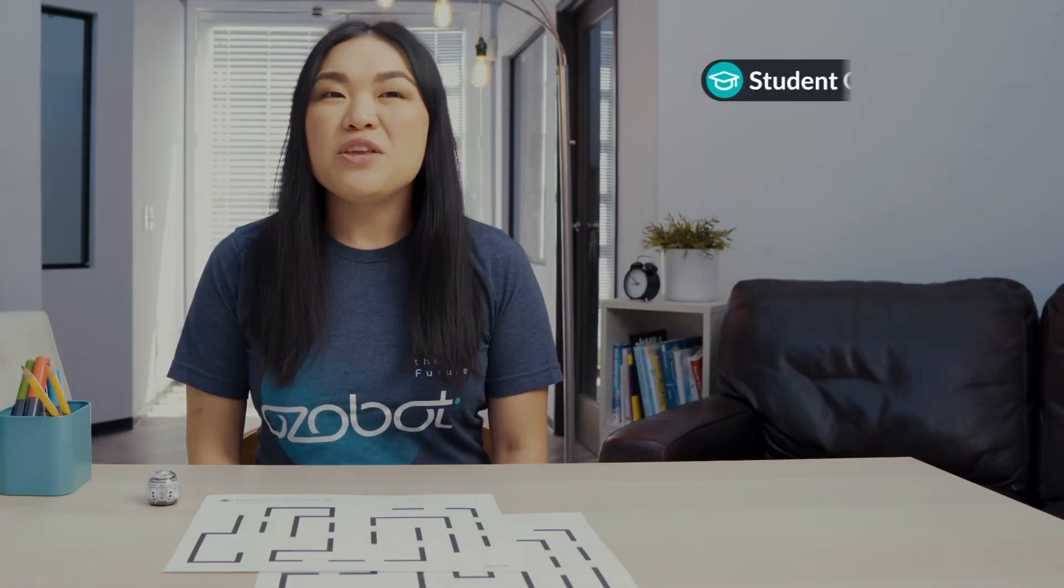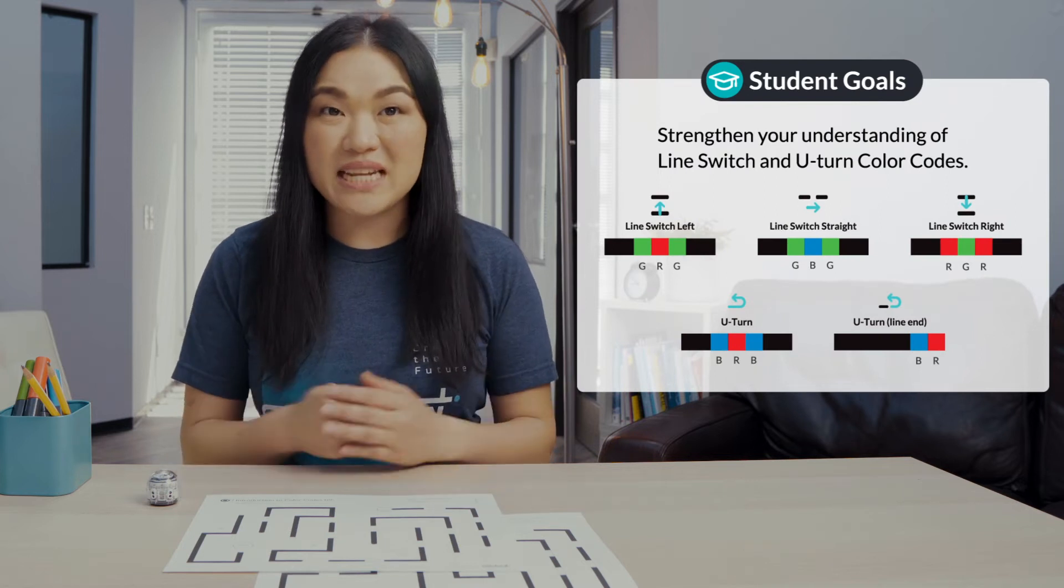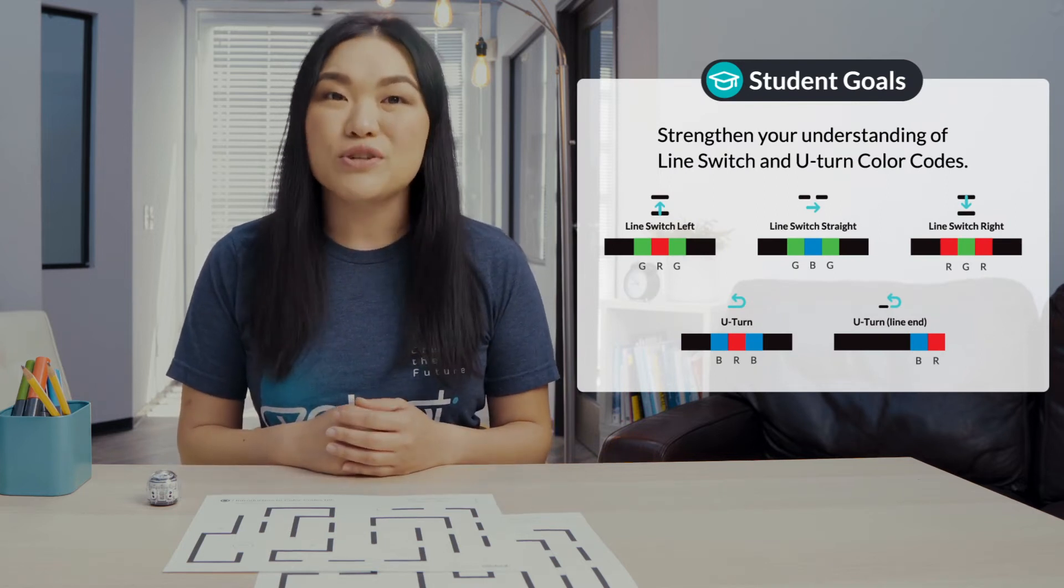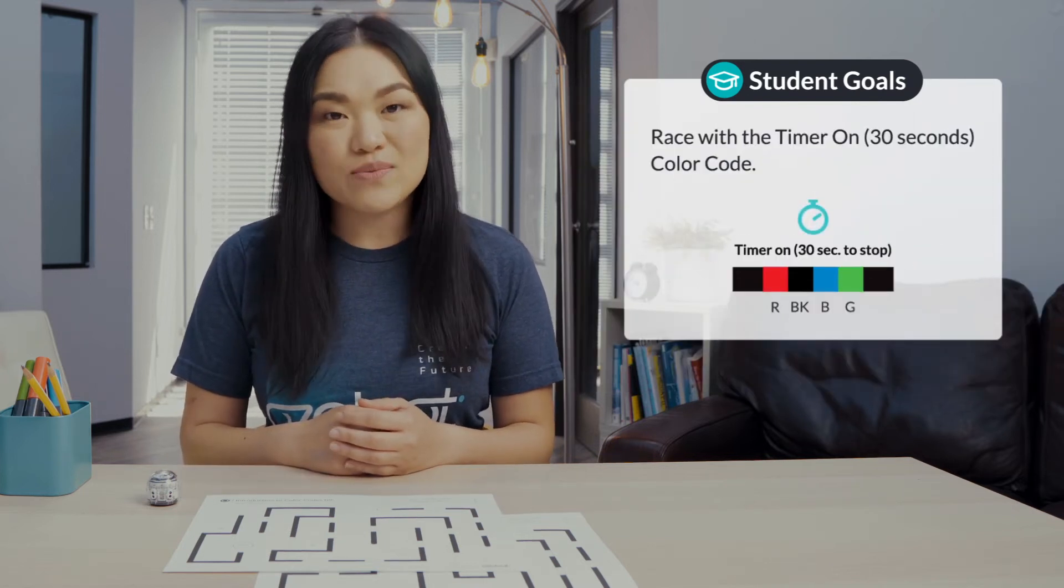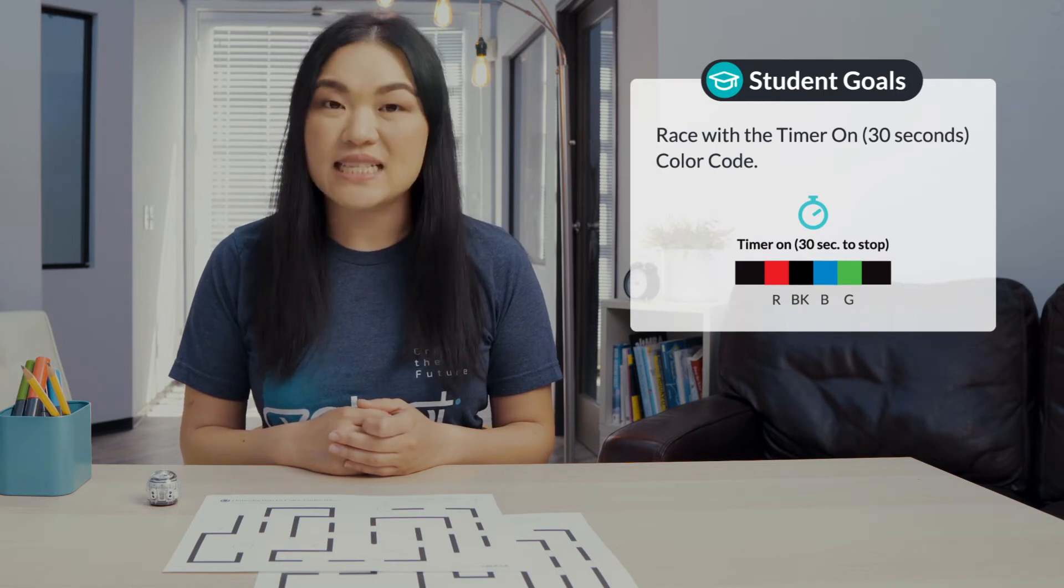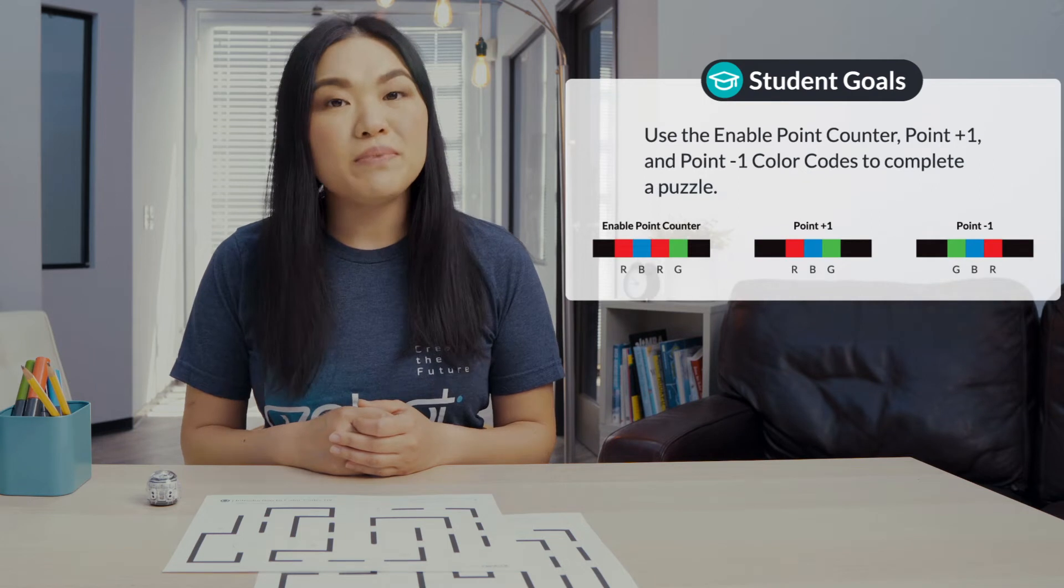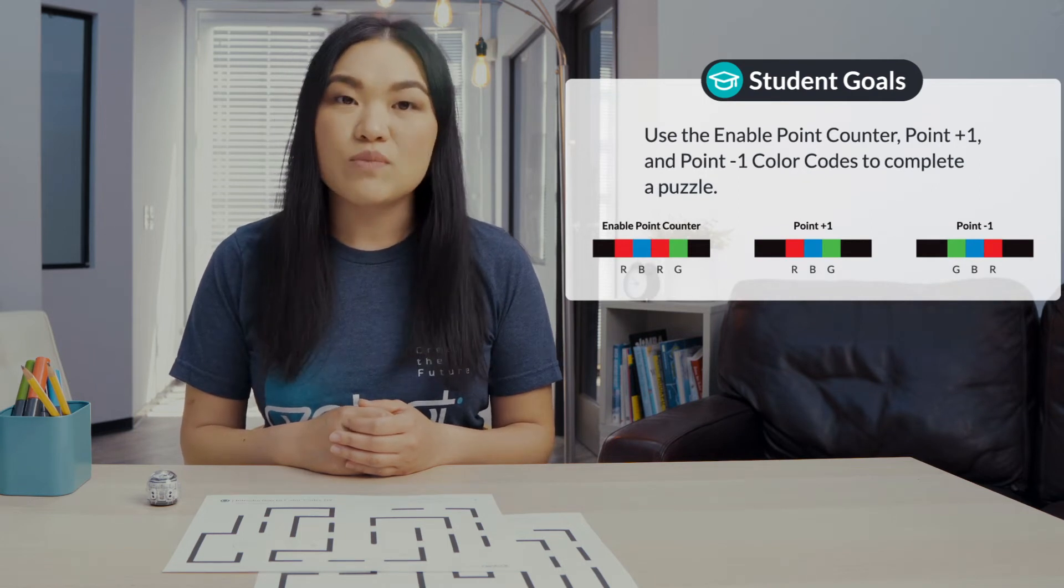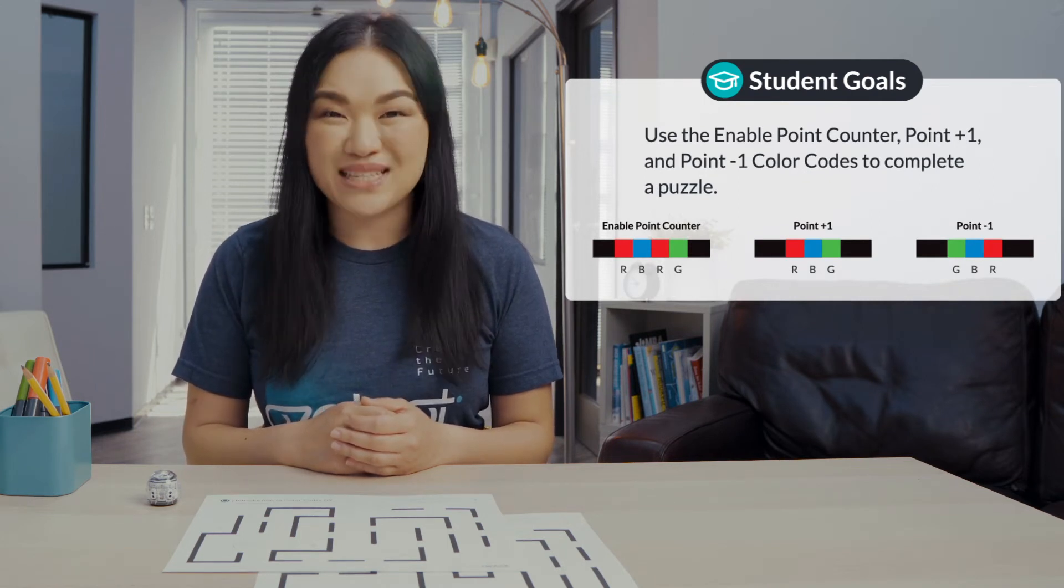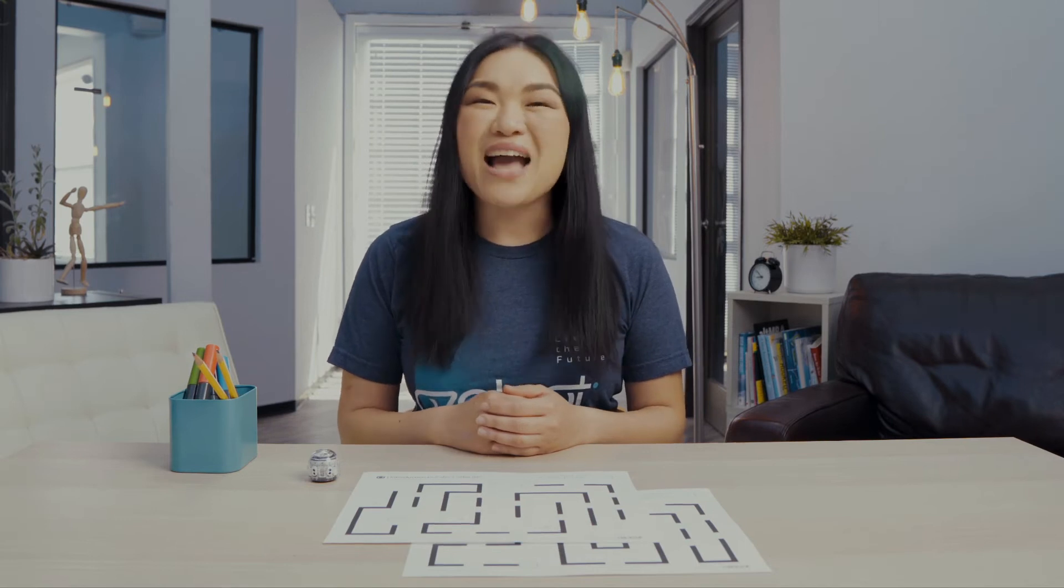In today's lesson, you will strengthen your understanding of line switch and U-turn color codes, race with the timer on 30 seconds color code, and use the enable point counter, point plus one, and point minus one color codes to complete a puzzle. Get ready to have a little fun with the color codes you have learned.